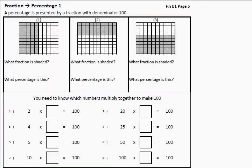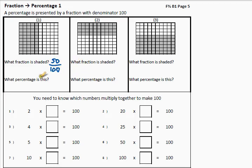Now we can work out equivalent fractions and simplify a fraction. Now we need to look at what a percentage is. A percentage is represented by a fraction with a denominator — a bottom number — of a hundred. There we have a fraction: a hundred blocks. What fraction is shaded? Let's count in tens — that's the easiest: ten, twenty, thirty, forty, fifty. In other words, fifty out of one hundred. And what is that as a percentage? Fifty percent.